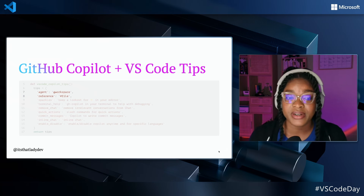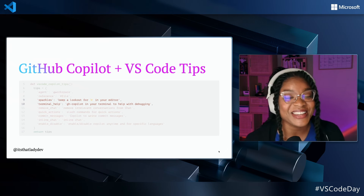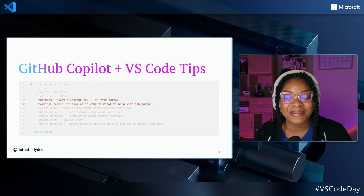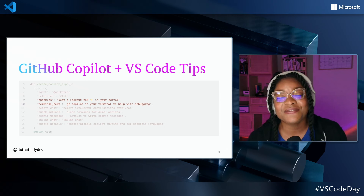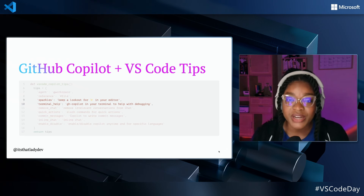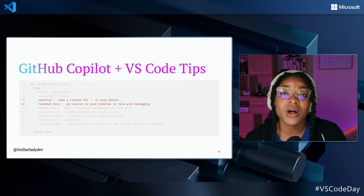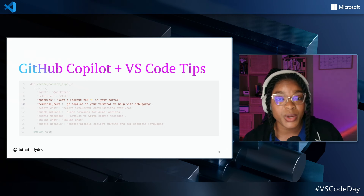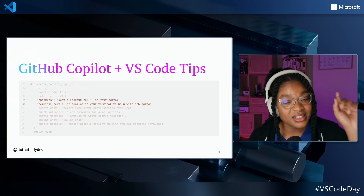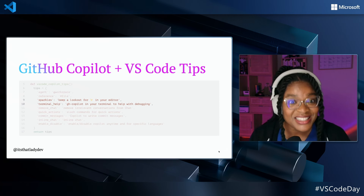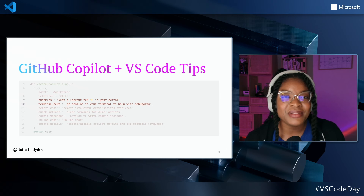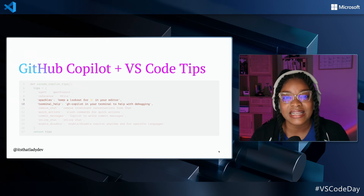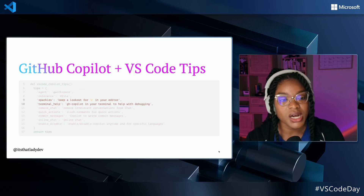I'll be showing you how to reference a single file today. We also have sparkles in VS Code for GitHub Copilot — they're nested throughout the editor. You can find them embedded right in the editor where you write your code, in the section where you stage your changes to get commit messages, and also in the terminal.